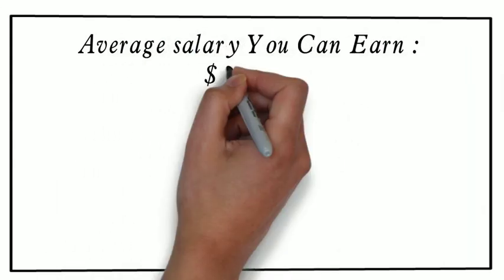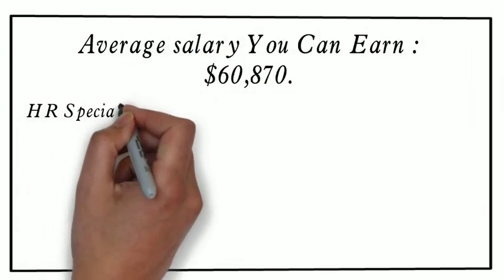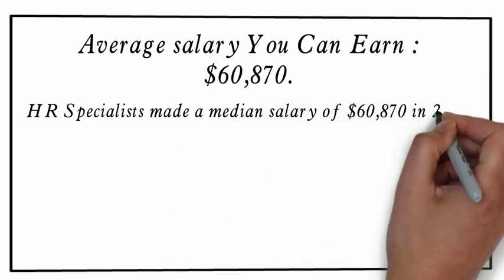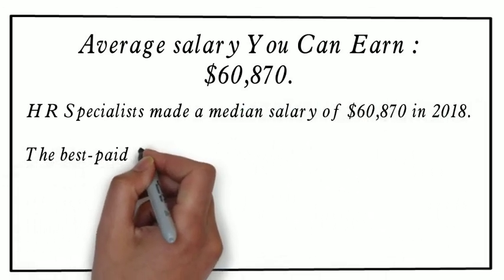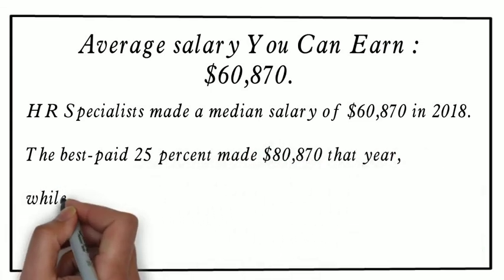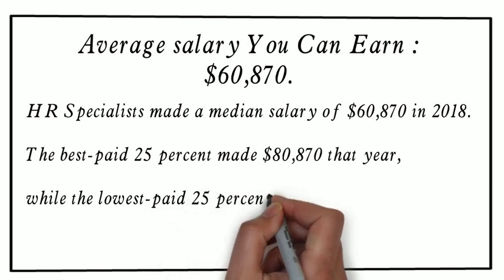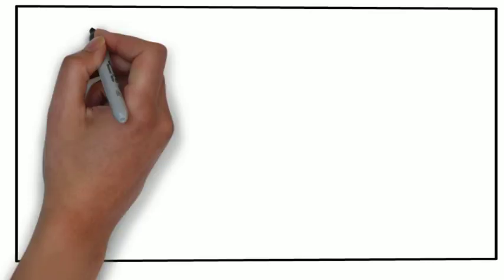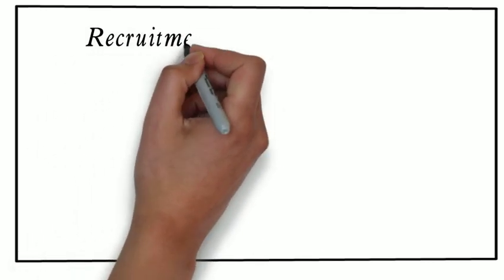Average salary you can earn $60,870. HR specialists made a median salary of $60,870 in 2018. The best paid 25% made $80,870 that year, while the lowest paid 25% made $44,480. Their work often goes beyond recruitment and hiring.